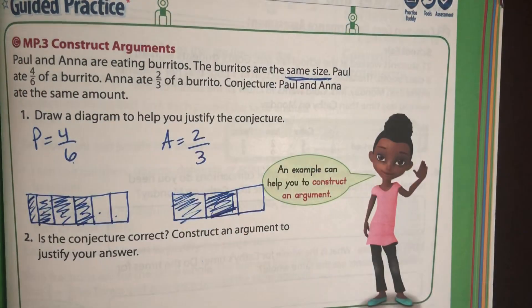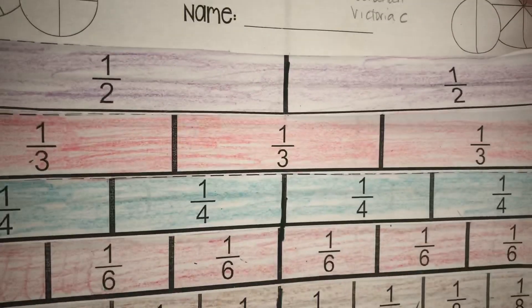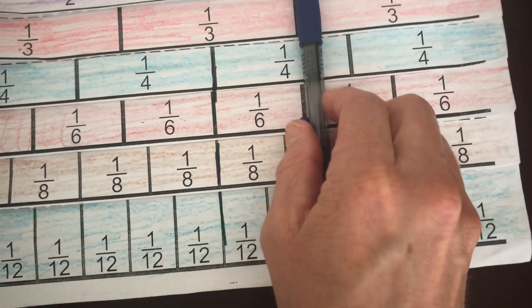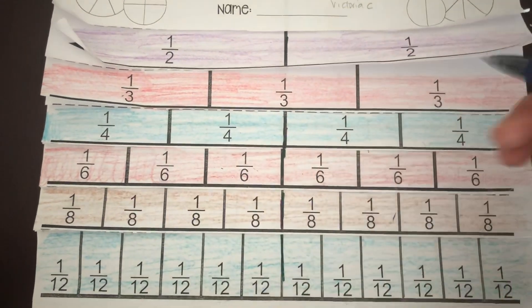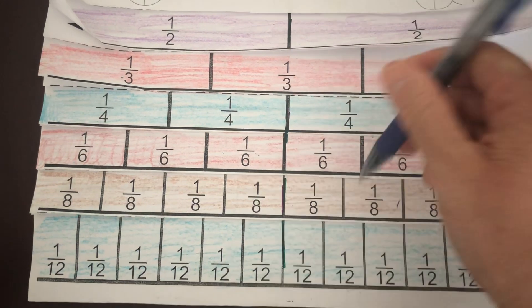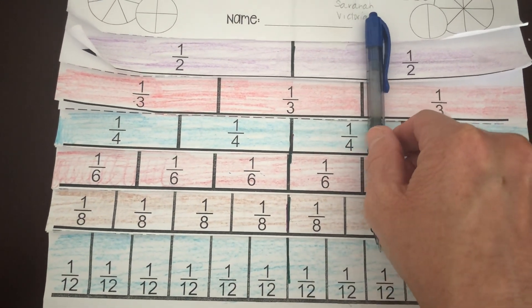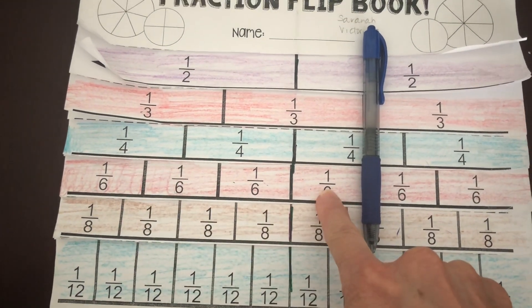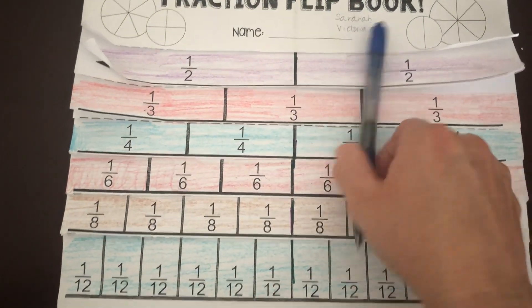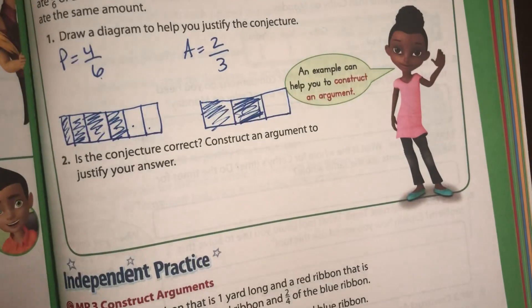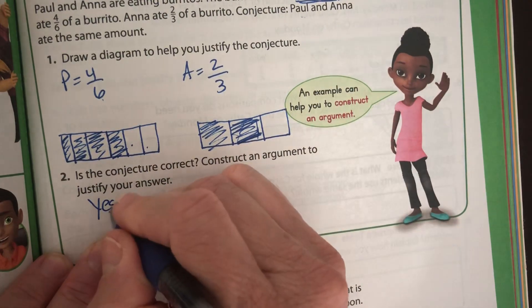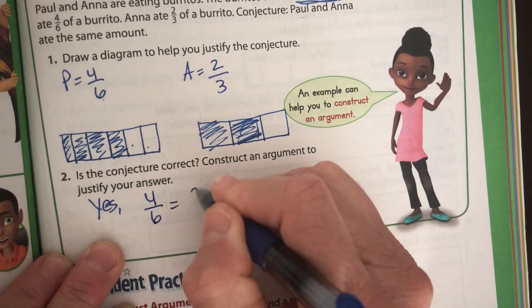I should have put them right on top of each other so you could see. But if we look — we have four-sixths, that's one, two, three, four — right there. And two-thirds — right there. Do you see how these are the same line? Four-sixths and two-thirds are the same. They ate the same amount of burrito — cut into six pieces and ate four, or cut into three pieces and ate two. So the conjecture is correct: Paul and Anna ate the same amount. Four-sixths is equal to two-thirds.